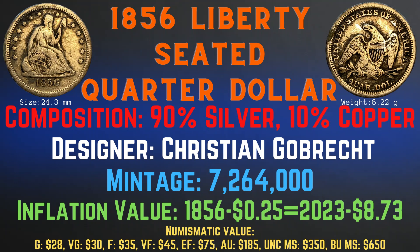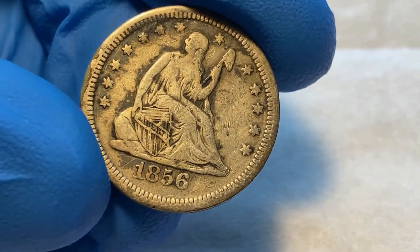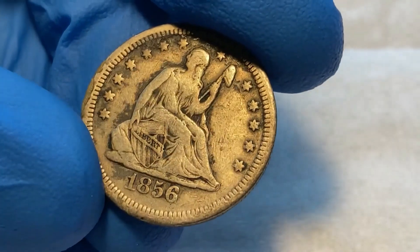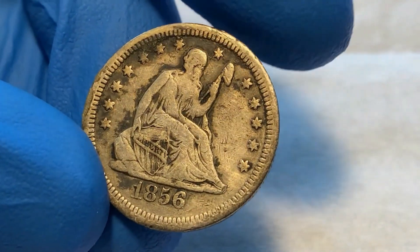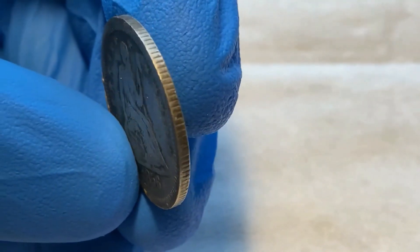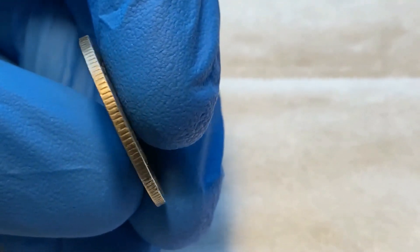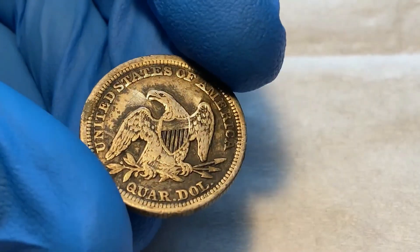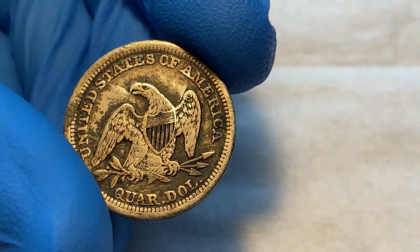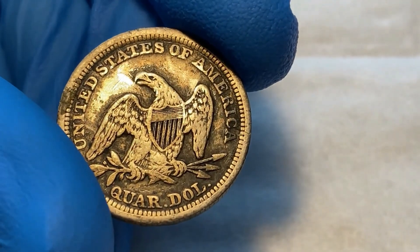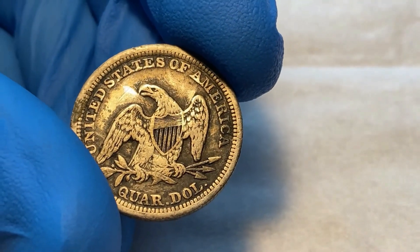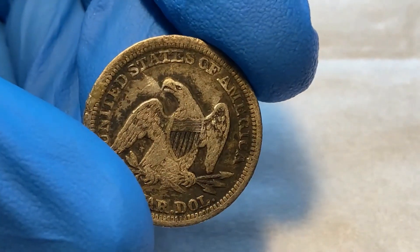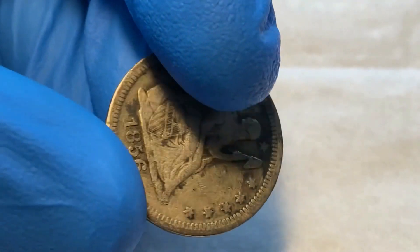Now let's take a closer look at the 1856 Liberty Seated quarter dollar from my collection. This coin still has quite a bit of detail visible on the front, the edge reeding is clear, and the back — the eagle, shield, and wings — are all still quite detailed. There is some slight staining behind the eagle, but overall I would grade this coin in very fine condition.